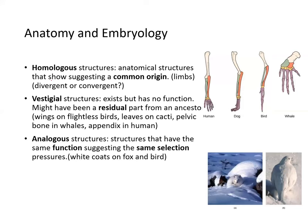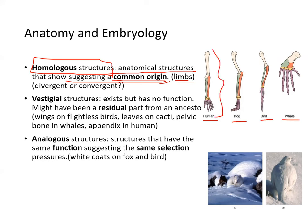Anatomy and embryology can provide insights into evolution. Homologous structures are anatomical structures suggesting a common origin. Limbs from different animals all have similar bones but in different shapes — the human arm, dog's leg, bird's wing, and whale's fin all correspond. Is this convergent or divergent evolution? Convergent means serving the same function; divergent means stemming from the same origin. This is an example of divergent evolution creating homologous structures.